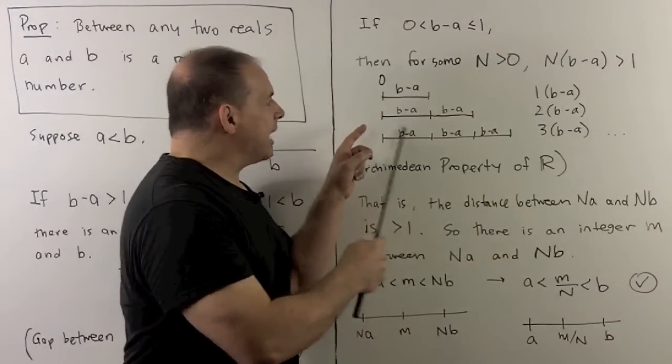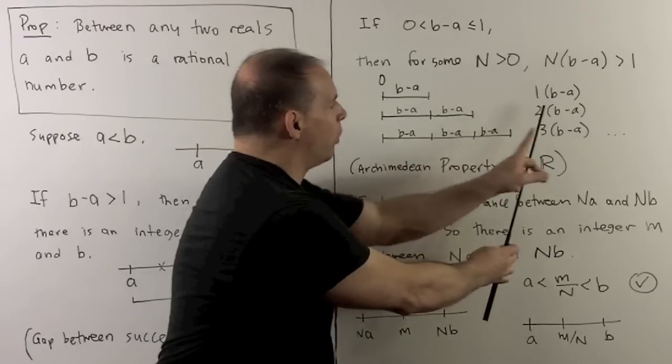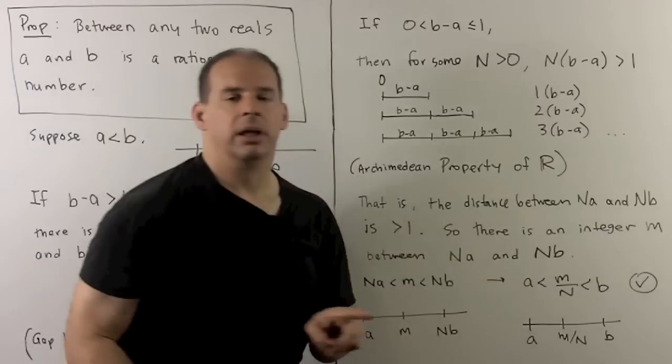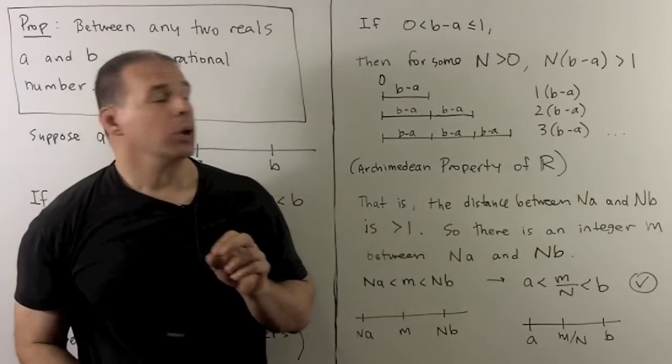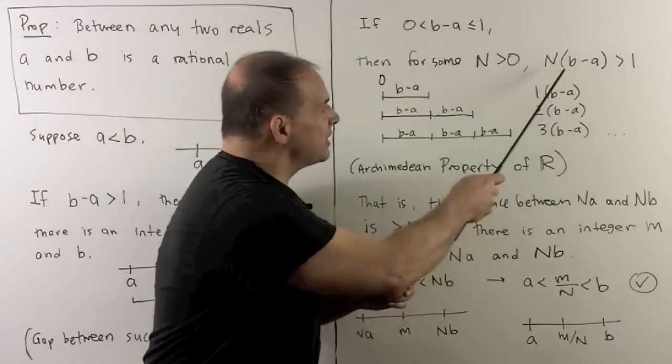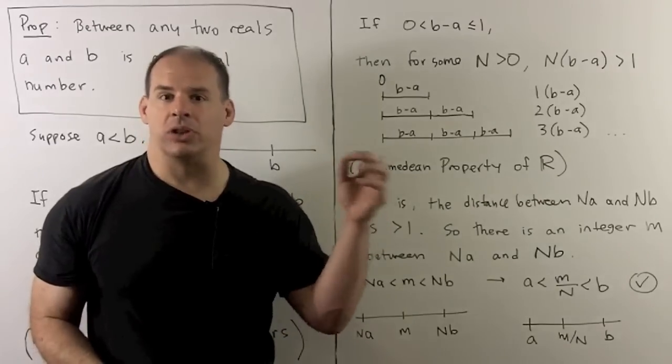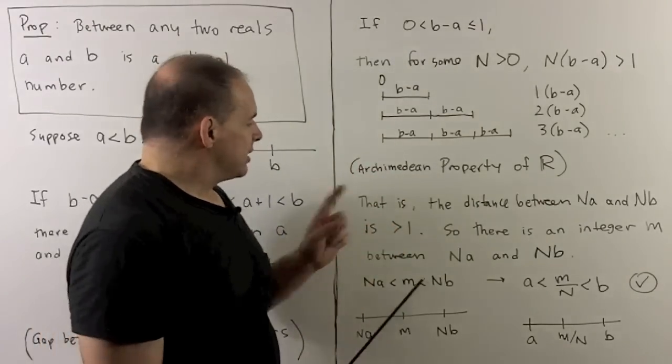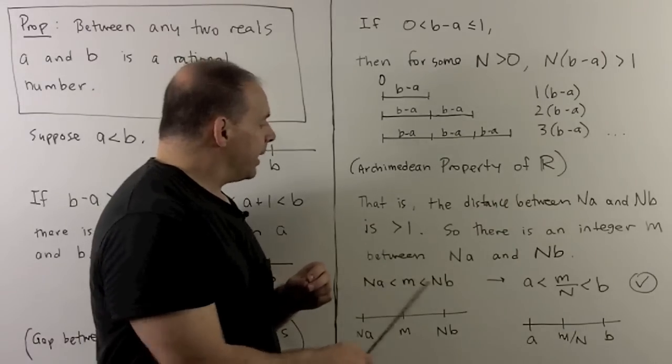I can add that to itself continually until we get a number that's strictly bigger than one. So, if I take b minus a and keep adding it to itself, eventually, if one's here, this is going to go past one. Now, how do I make use of that?